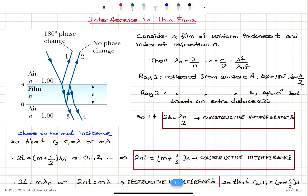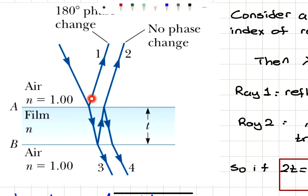What happens to light incident on interface A between air and the film? Ray 1 is reflected, obeying the law of reflection as specular reflection. The transmitted portion is refracted and hits interface B between the film and the air. This gets reflected from interface B and partially refracted into air as ray 3. The reflected portion gets partially transmitted to air as ray 2, and may reflect again from interface A and transmit as ray 4.